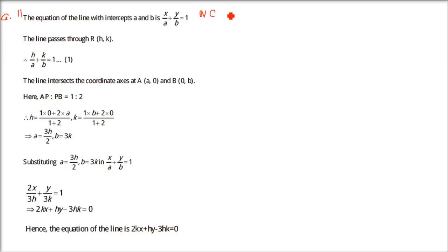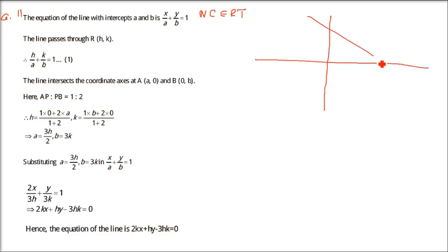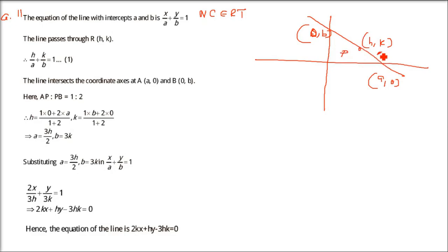This is question number 11, also an NCERT question. We have to find the locus of a point R(h, k) that divides the line segment between the axes in the ratio 1:2. We assume the equation of the line with intercepts a and b: x/a + y/b = 1. The x-intercept point is (a, 0) and y-intercept is (0, b). Point H,K lies somewhere on this segment dividing it 1:2.